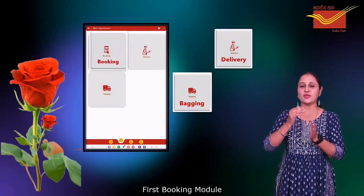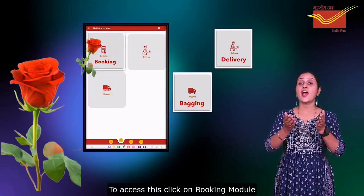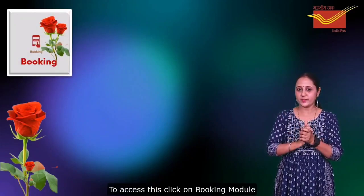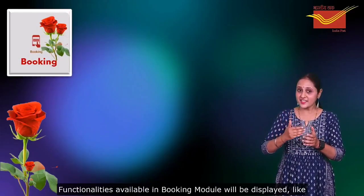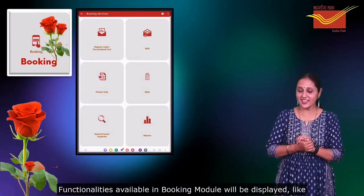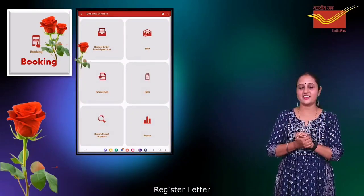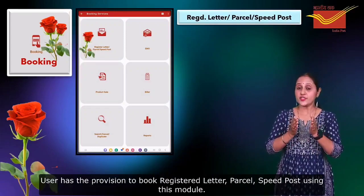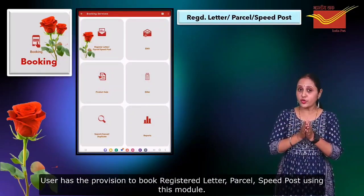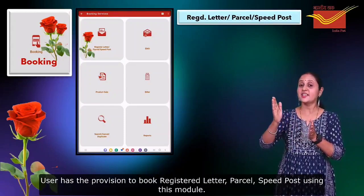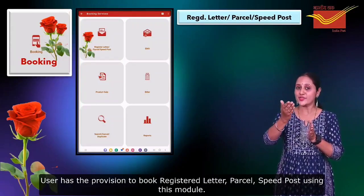First, the Booking module. To access this, click on the Booking module. Functionalities available under the Booking module will be displayed, like Registered Letter, Parcel, and Speedpost. The user has a provision to book Registered Letter, Parcel, and Speedpost using this module.